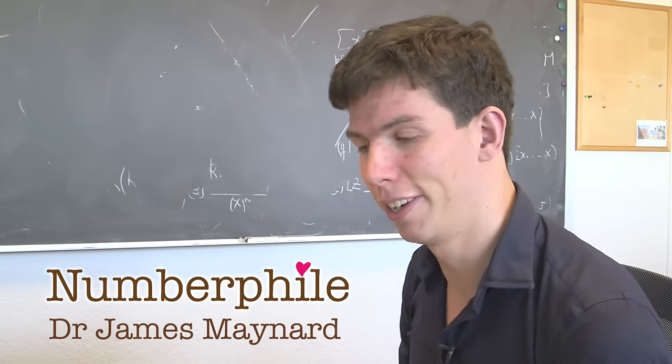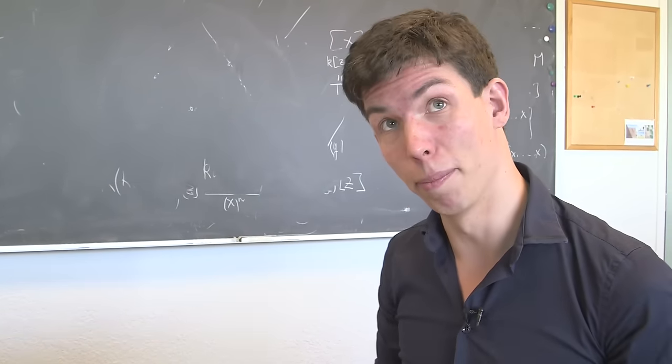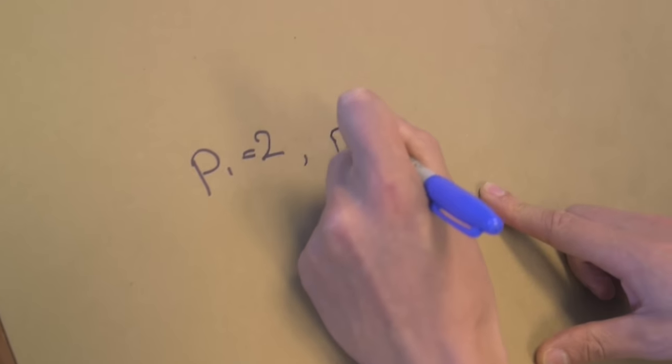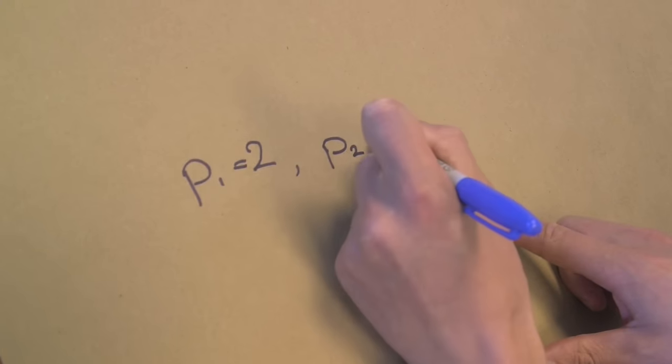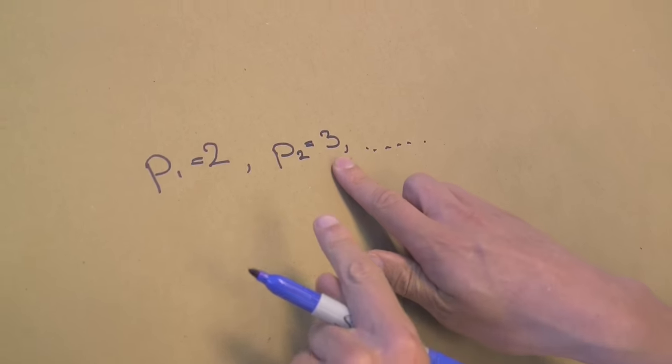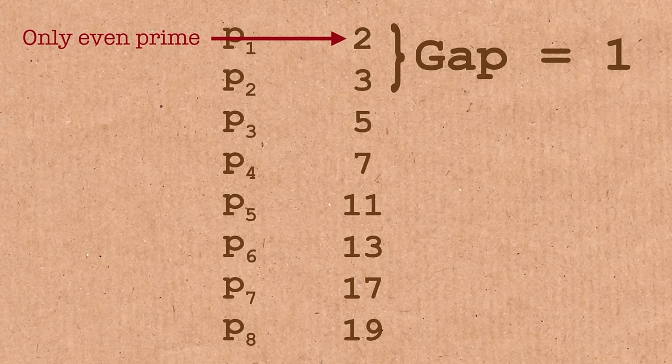I'm interested in the twin prime conjecture, which asks about consecutive prime numbers. P1 is the first prime, equal to 2, and P2 is the second prime, equal to 3. You can look at the gaps between the primes. The gap between 3 and 2 is 1. This is the only time you can possibly have two prime numbers which differ by exactly 1.